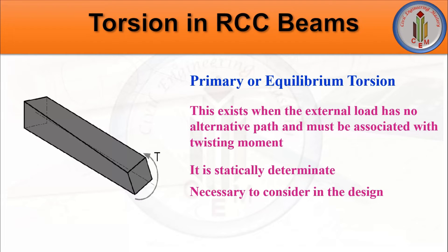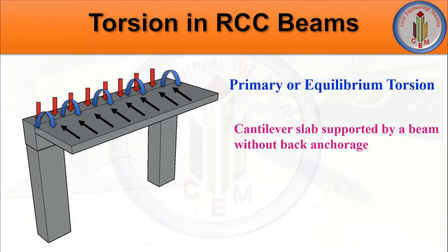Primary torsion is independent of the torsional stiffness of the member. When a structural member experiences primary torsion, it must be designed for the full torsion transmitted by the member to the support. Primary torsion is mainly induced in beams curved in plan subjected to gravity loads, and in beams where transverse loads are eccentric with respect to the shear center of the cross section.